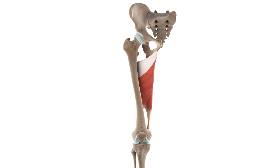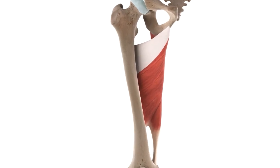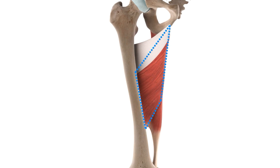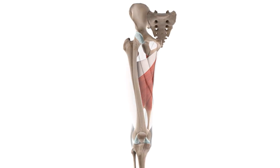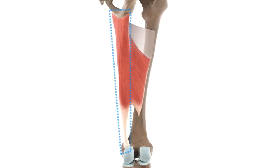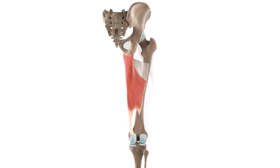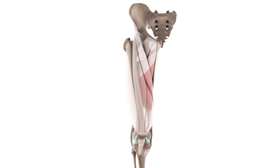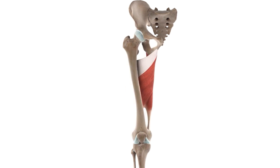As you can see on the screen, the adductor magnus muscle has a triangular, fan-like shape. It consists of two parts: an adductor pubofemoral portion and a hamstring ischio-condylar portion. It is the largest and most powerful muscle of the adductor group.